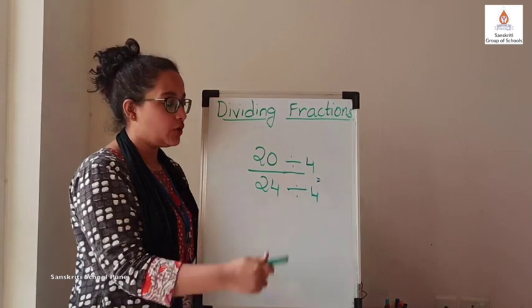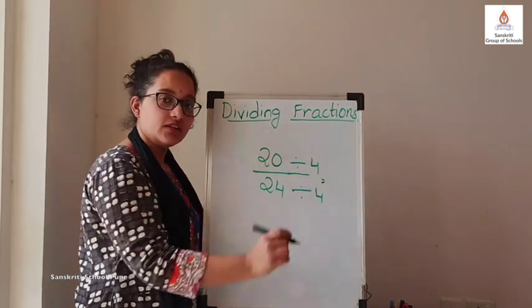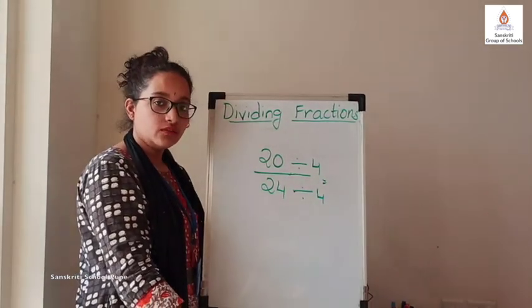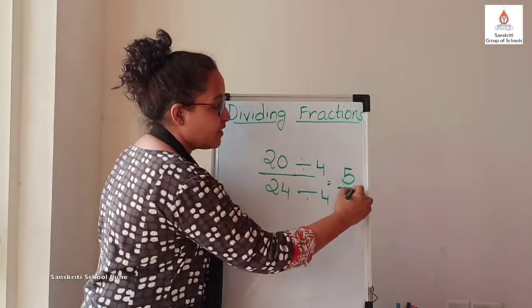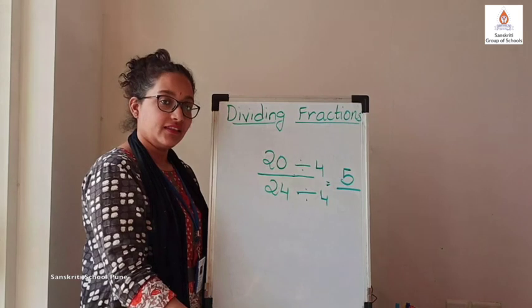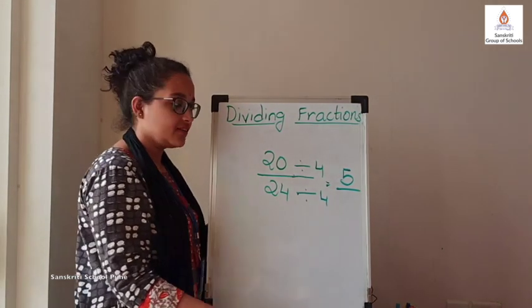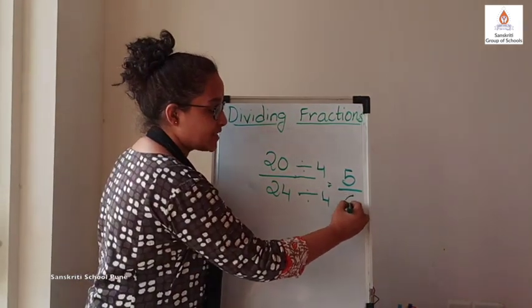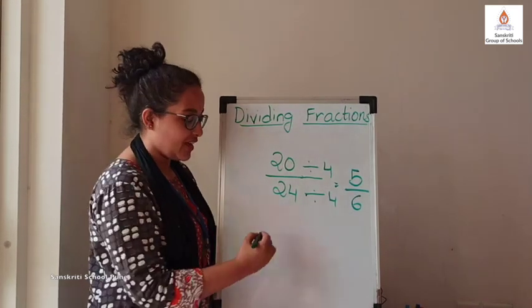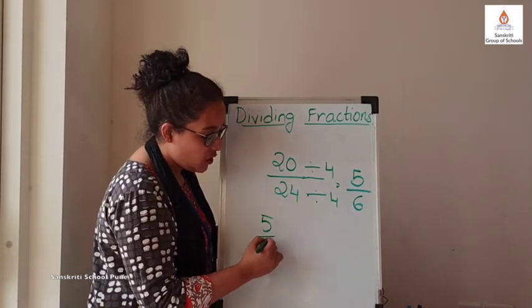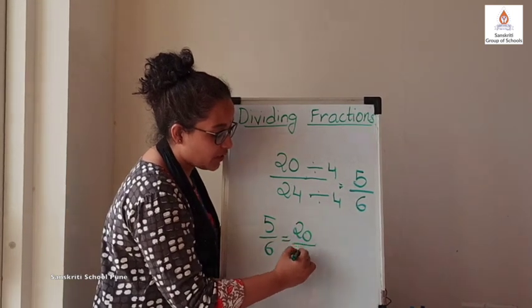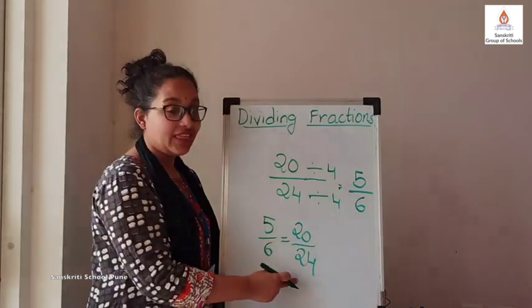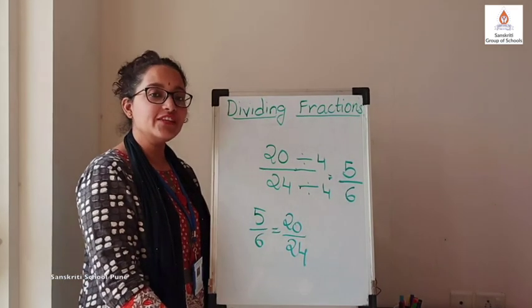What do you get when you divide 20 by 4? And in the denominator you get 6. So, what can you say? 5 upon 6 is equal to 20 upon 24. They are equivalent fractions.